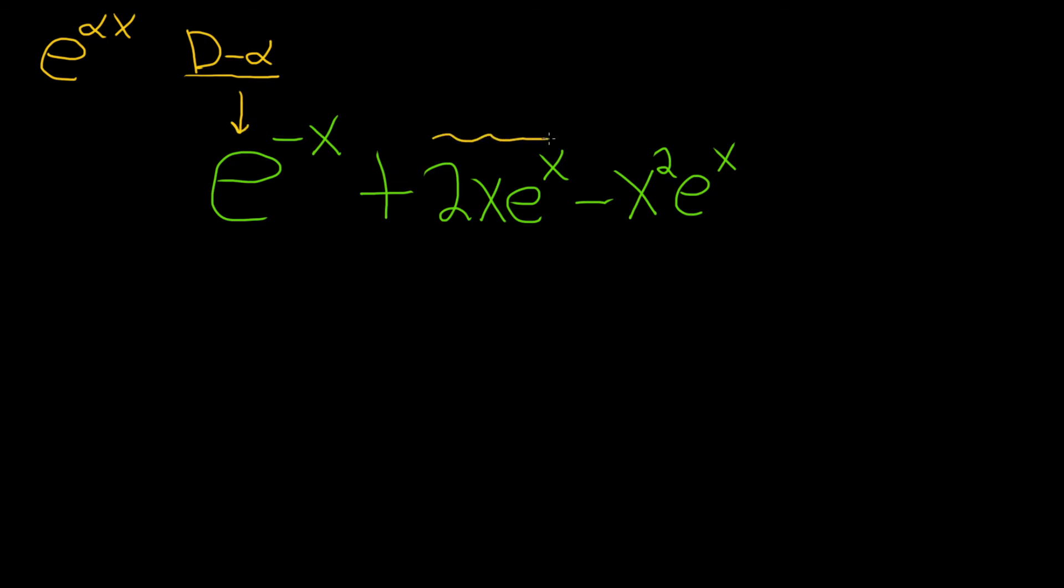These pieces here are related. They're both powers of x times e^x. In order to annihilate, let's say it was e^x. In that case, you would just use D minus α. Alpha is 1 here, so you'd use D minus 1.